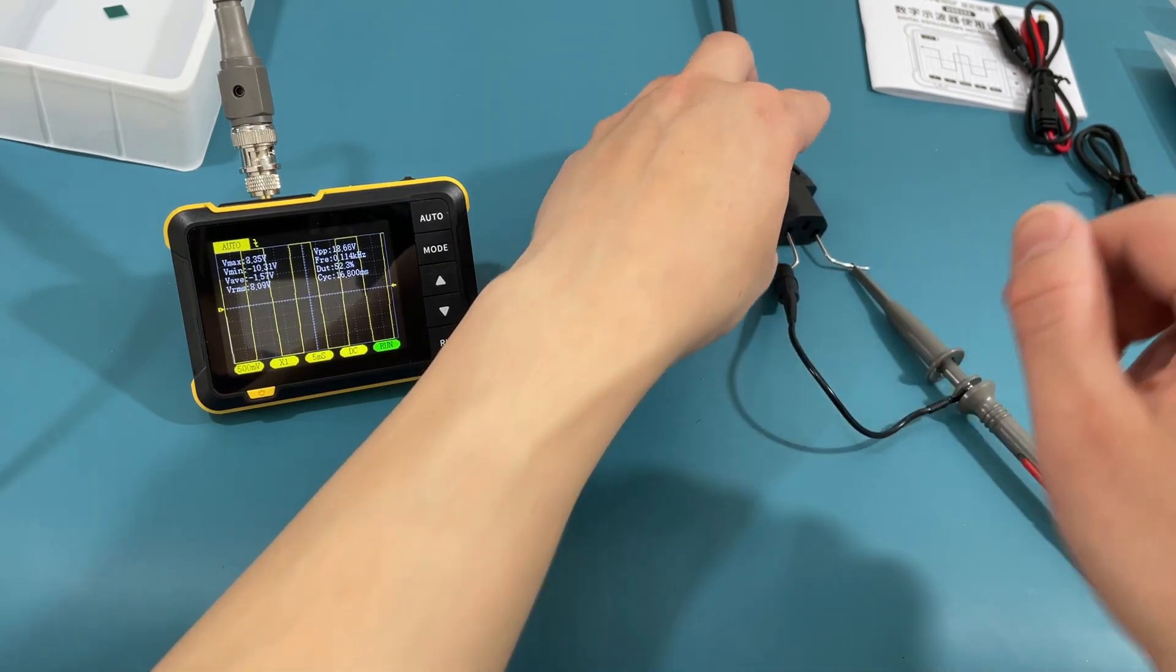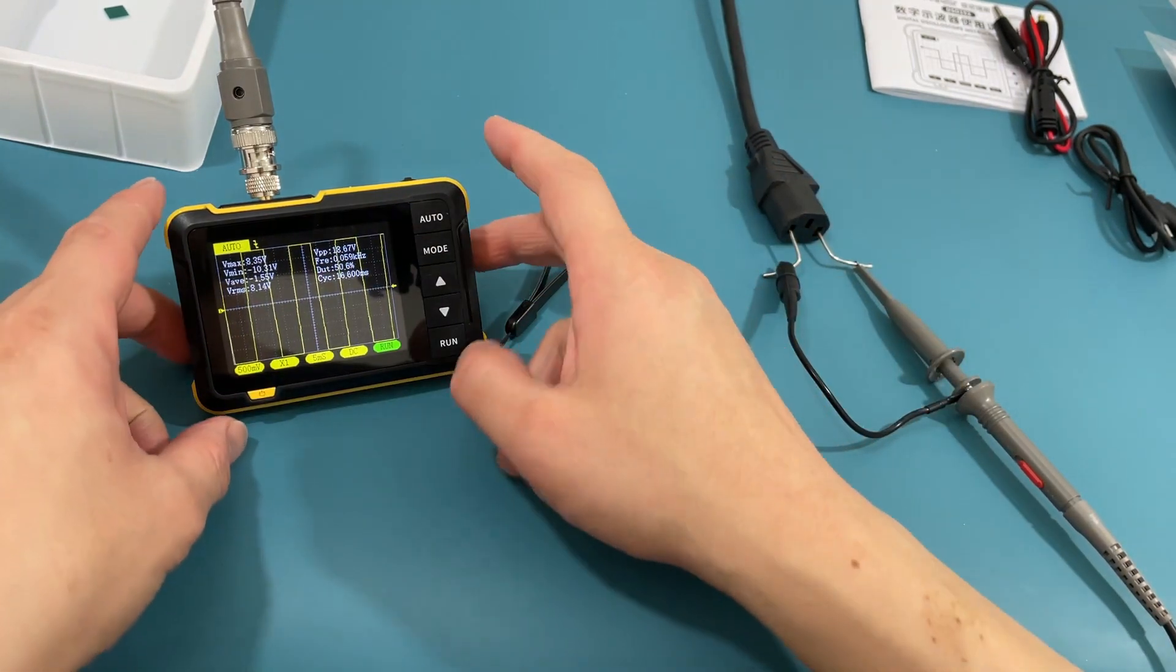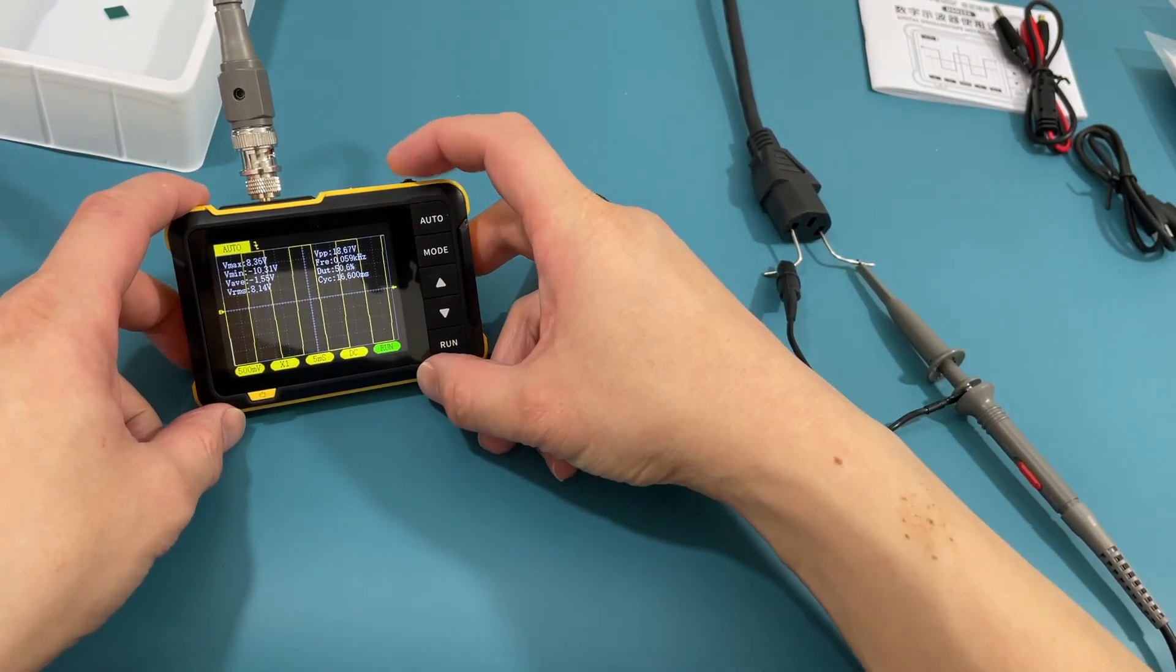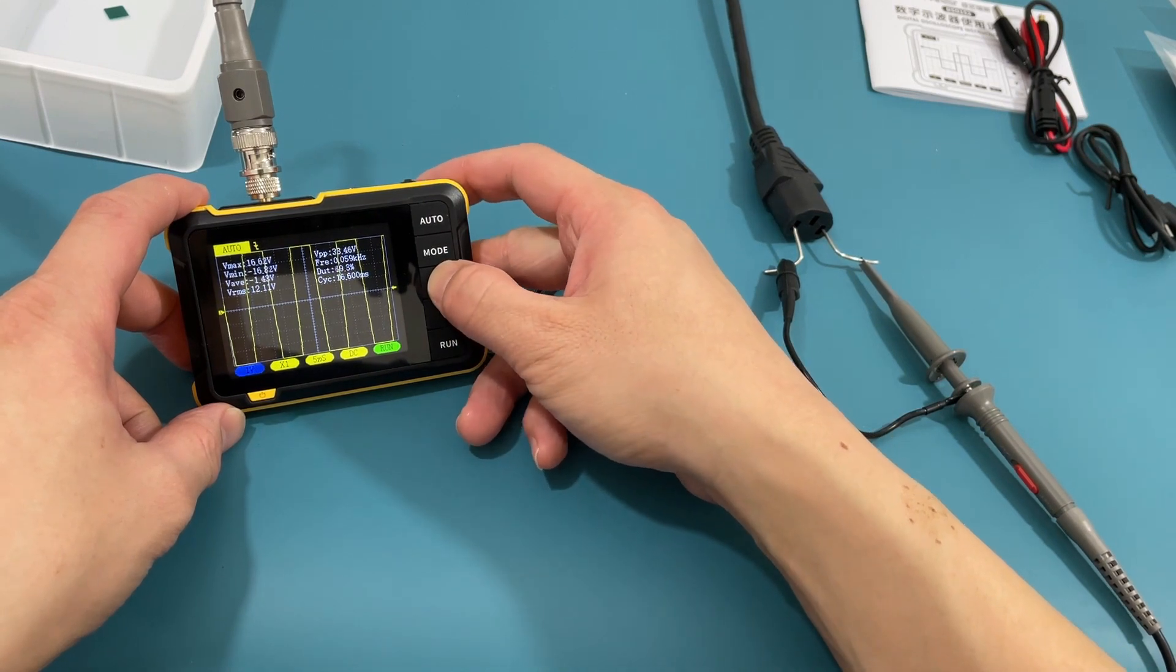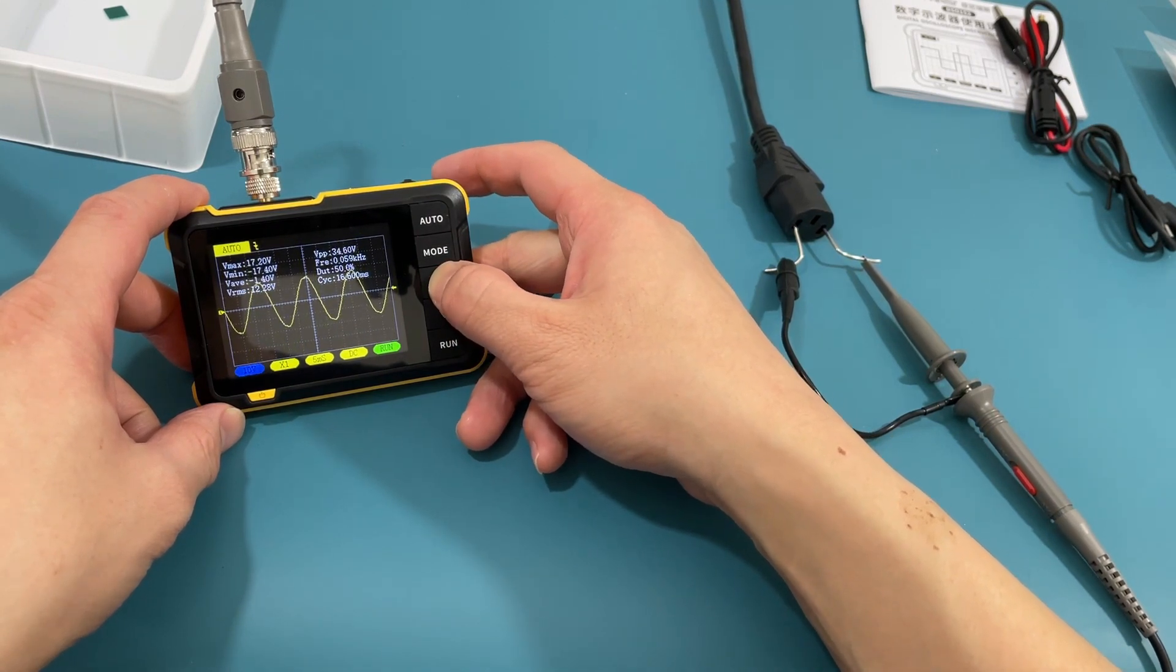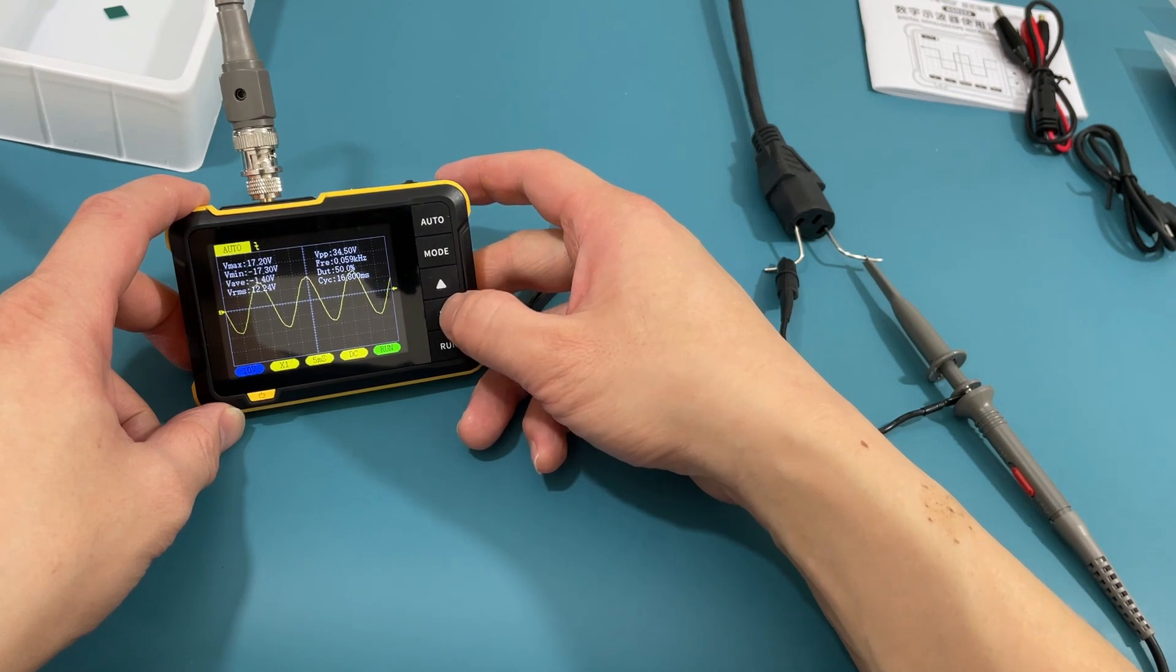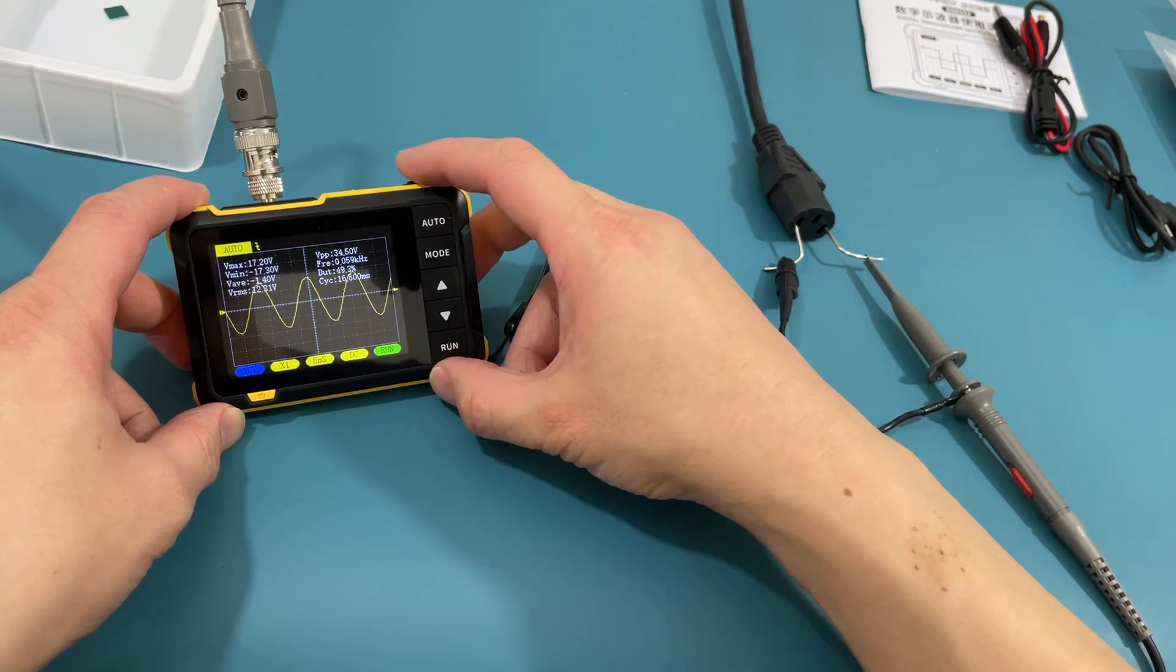As we can see, the oscilloscope shows the electrical signal when the probe is connected to the power cord. We can adjust the amplitude of the sine wave by pressing the up and down buttons.